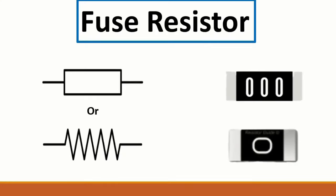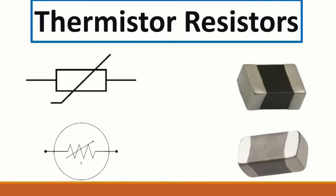Then we have fuse resistors - you can find zero or three zeros marked on them. The symbol could be the universal symbol or the US symbol. The universal symbol is found in every schematic worldwide, and the US symbol is also used. Then we have the thermistor resistor with two possible symbols - one with an arrow and a 'T' marking.